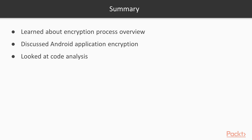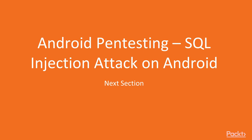In this section we first learned about the encryption process overview — what encryption means and how it works in Android. Then we covered what kind of encryption algorithms Android apps generally use and how to find them using the decompiling process. Finally we learned how to analyze code to get valuable data from it. In the next section we are going to learn about Android pen testing and SQL injection attacks on Android. Thank you so much for your time.